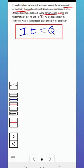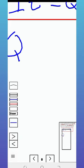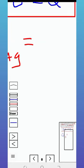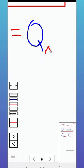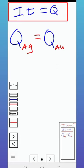So having that, what should we think of? Let's say Q in the case of Ag is equal to Q in the case of Au. So basically, this is what they mean.